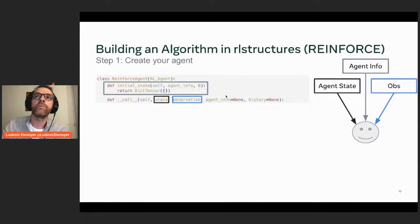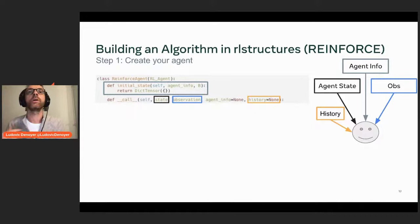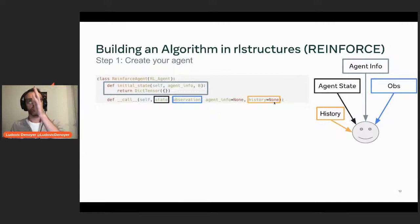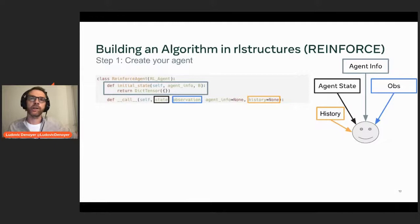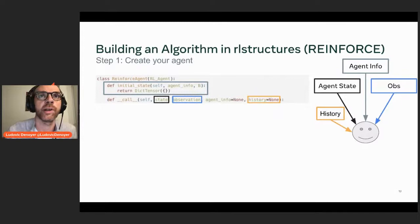You also receive the agent_info which controls the agent's behavior and comes from the user, not from the environment — for example the epsilon value of an epsilon-greedy policy. Additionally, the agent has access to the whole history of the trajectory, meaning it can read everything that happened before time t: all previous observations, actions, and internal states. This may be useful when implementing complex policies like transformer-based policies.